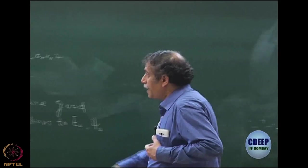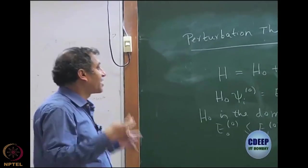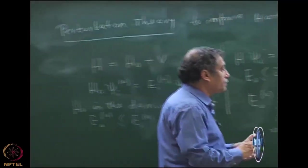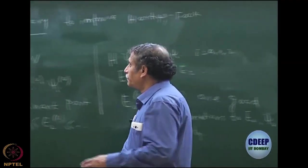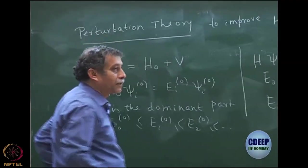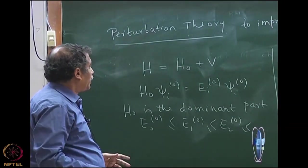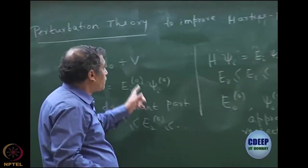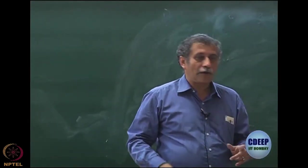We are only talking of ground state perturbation theory, so we are not bothered whether E₁⁰ is a good approximation to E₁ or not. I can only comment that E₁⁰ is an approximation to E₁, but it will not be as good as E₀⁰ is to E₀. So we must be able to write the Hamiltonian in this form — that is our first job — and then we will see the energy corrections.